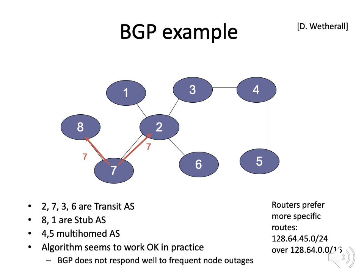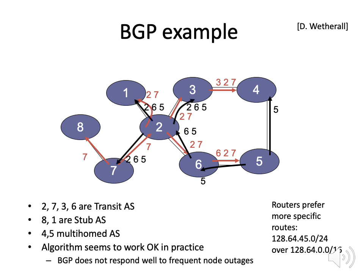Here's an example of BGP route propagation. AS 7 starts by announcing it can handle traffic bound for AS 7 to AS 8 and AS 2. AS 2 then forwards to AS 1, 3, and 7 saying it can handle traffic for AS 2 and AS 7. AS 3 tells AS 4 it can handle traffic for AS 3, 2, and 7. AS 6 tells AS 5 it can handle AS 6, 2, and 7. AS 5 then announces to AS 4 and AS 6 it can handle traffic for AS 5, and this gets propagated backwards so the whole set of routes is flooded.